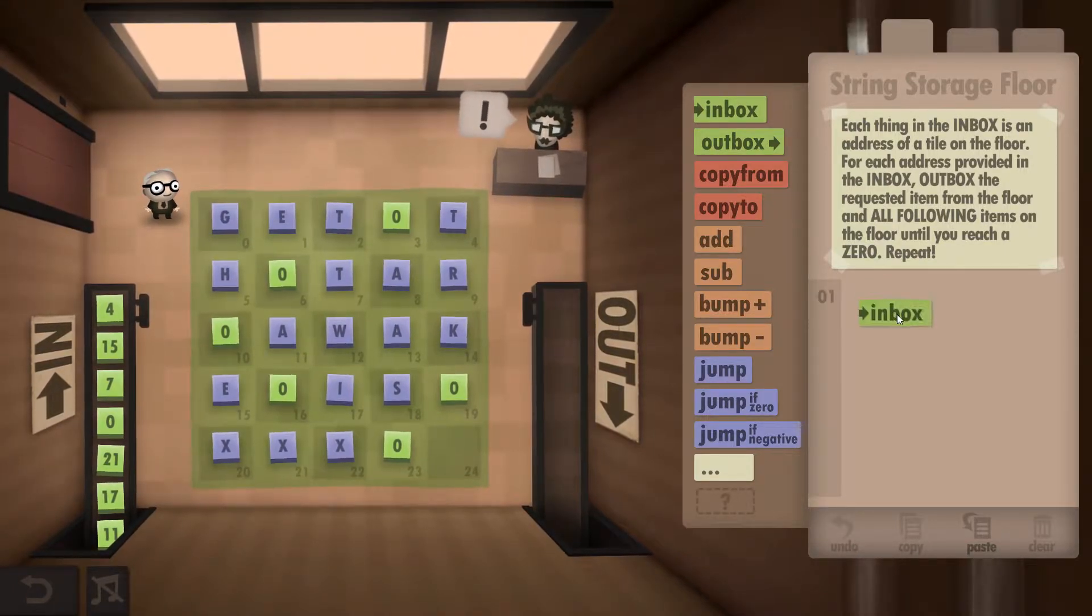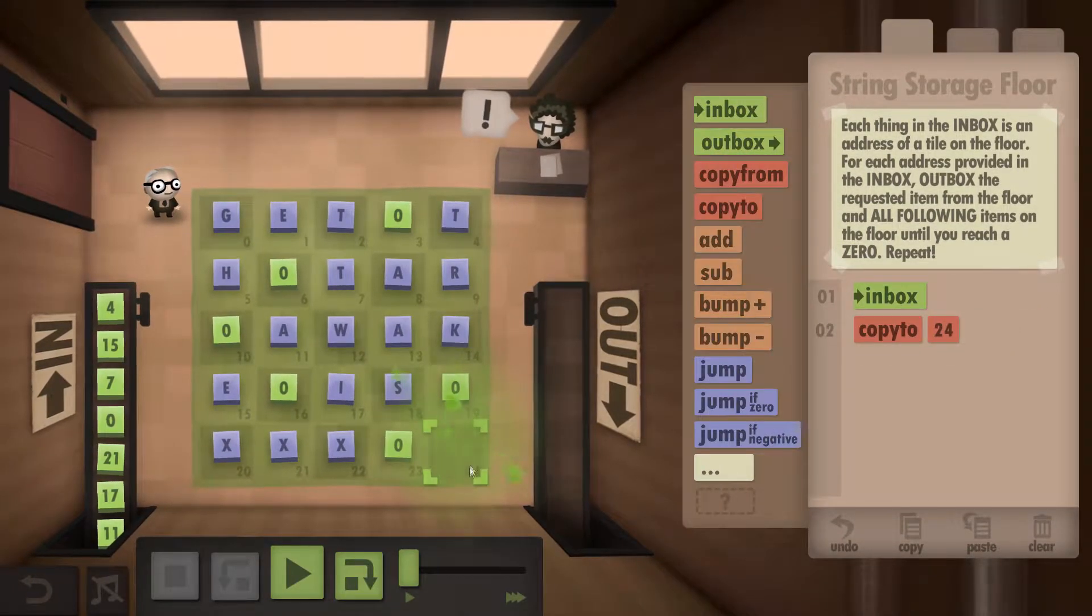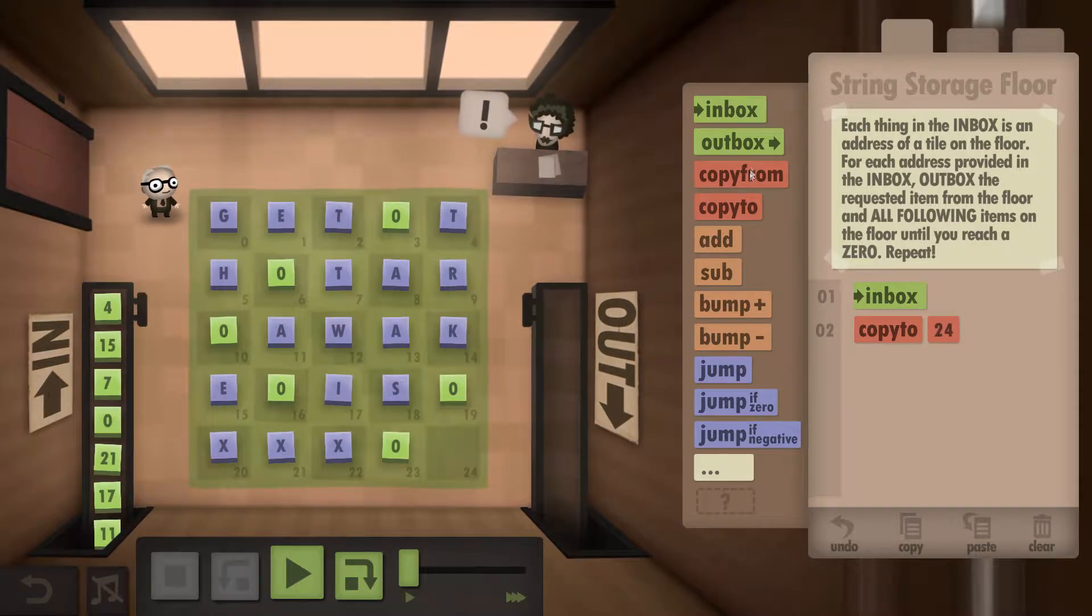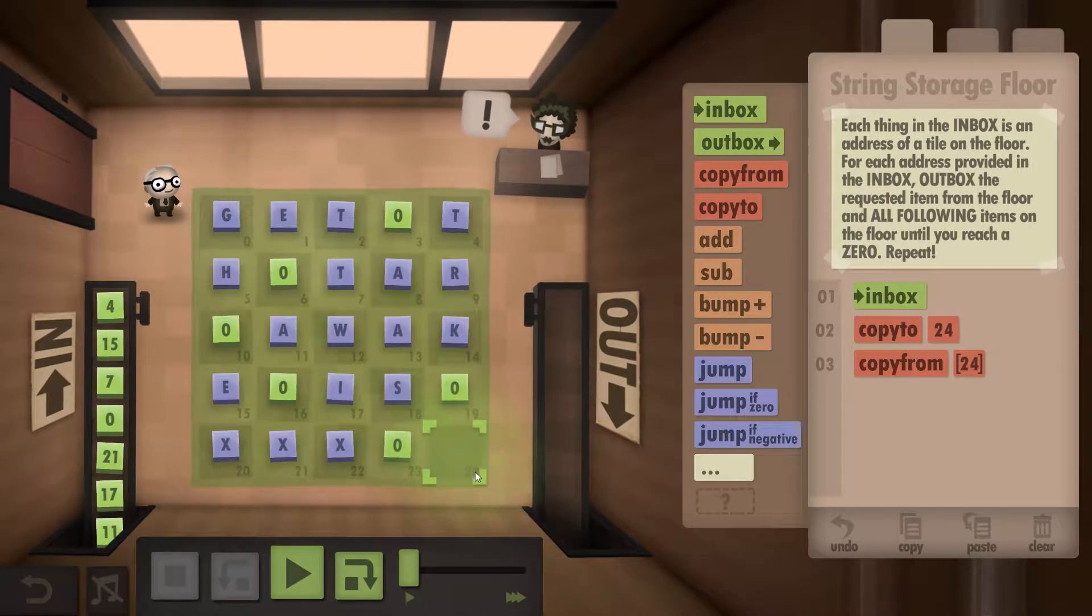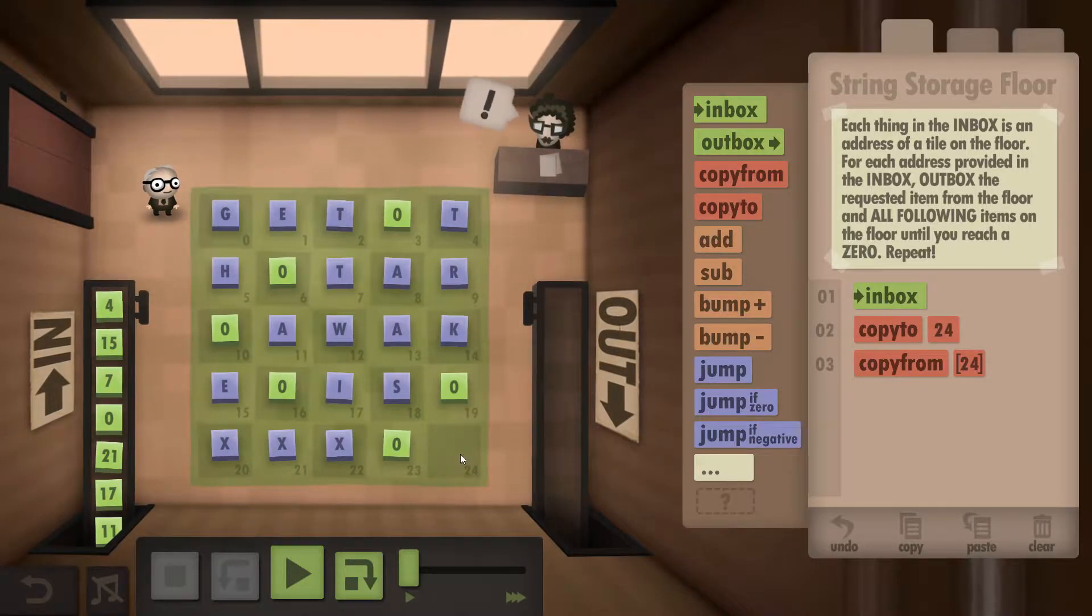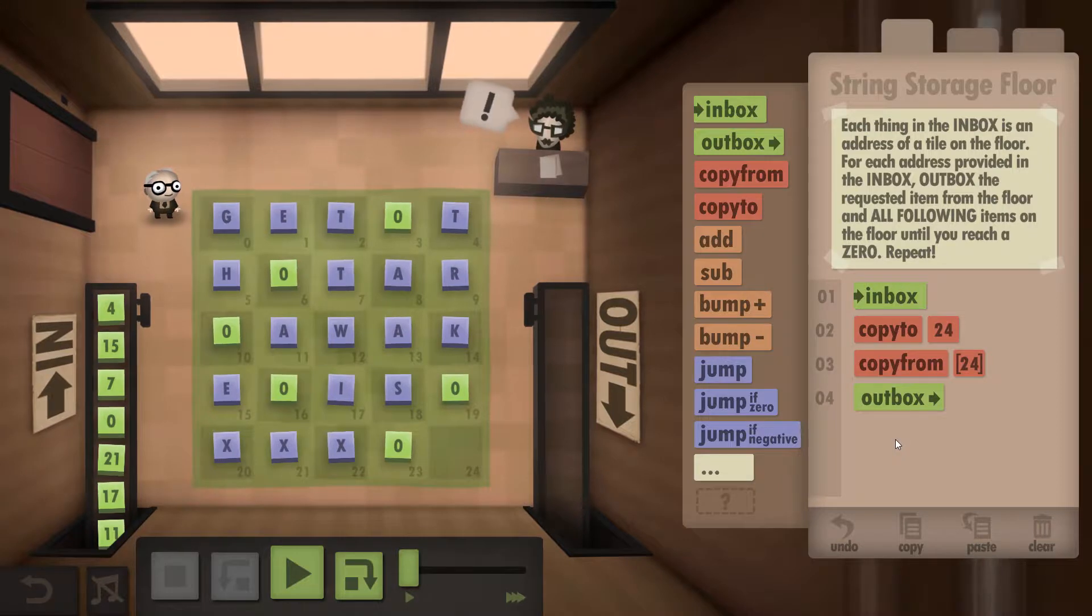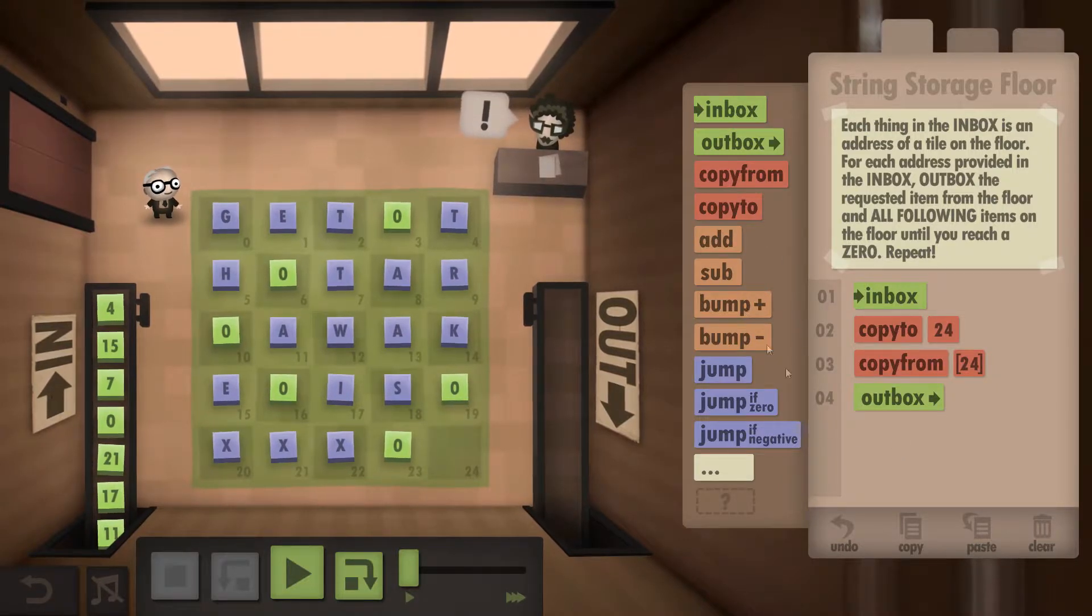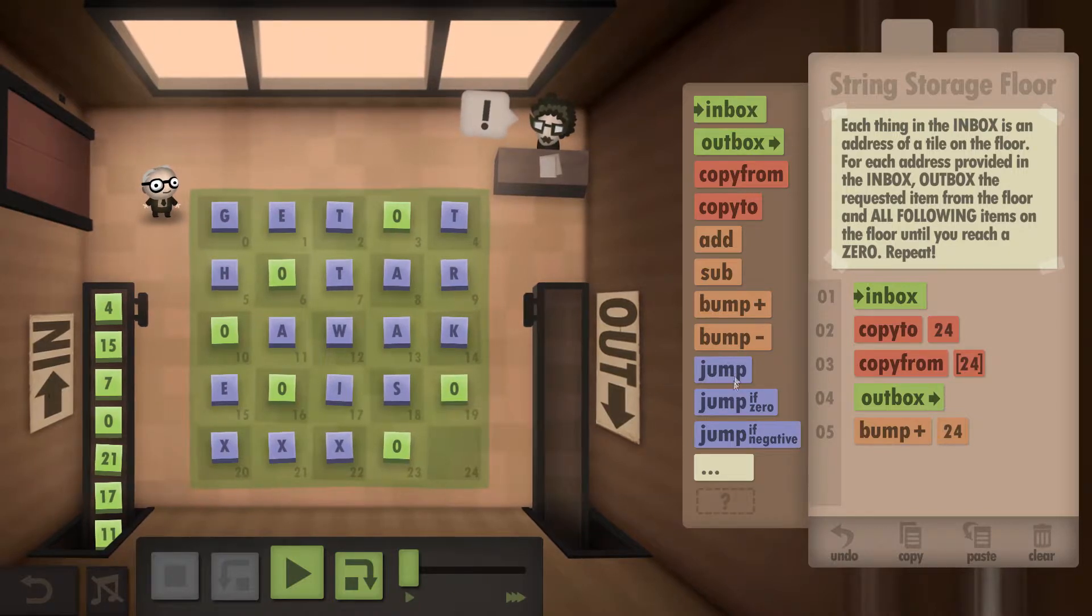The way we're going to do this is grab a number and we're going to write it down in the only 3 space just here. Once we've done that, we need to copy from the location that this number is pointing to. So it'll be a 4 so it's pointing to the T. We're going to outbox that T and then we're going to bump up this number to get to the next letter and we're going to do this whole process again.